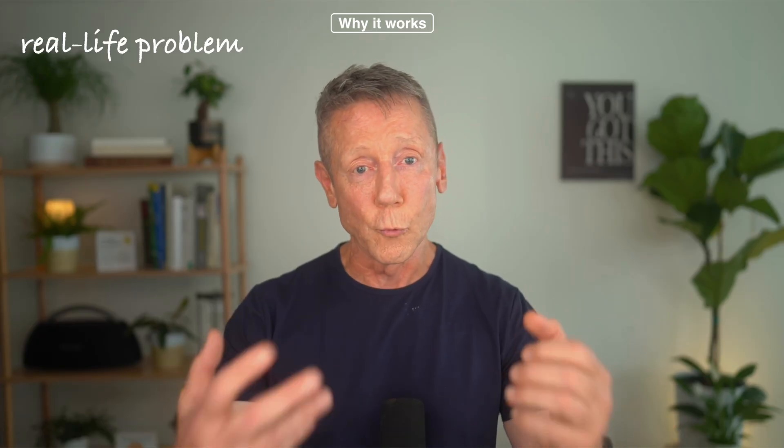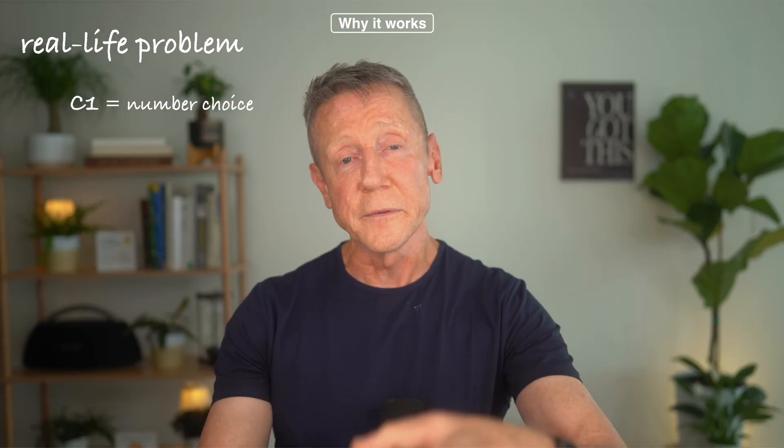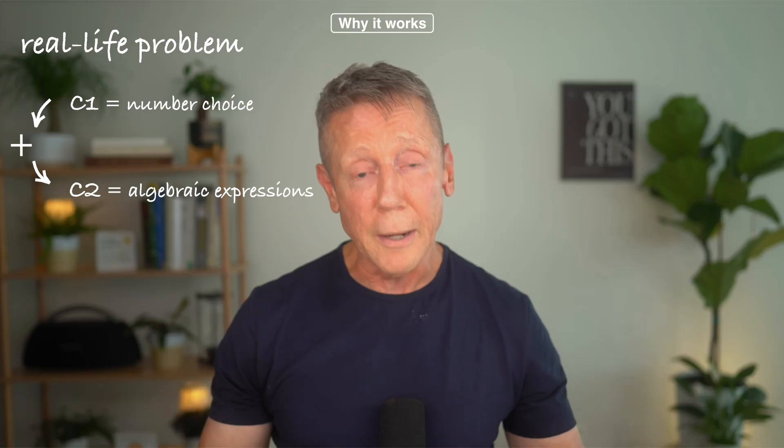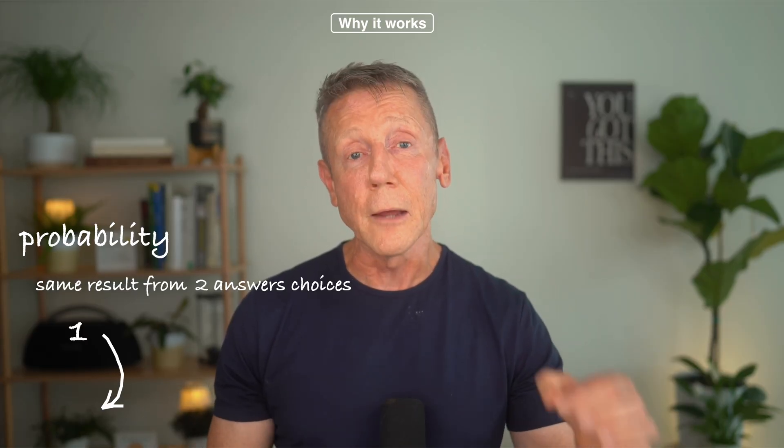But the engineer side of me says look, I respect that theory but we have a real life problem. We have constraints we put on the numbers we choose to use and the SAT writers have constraints on the algebraic expressions they create. When you combine those constraints it lowers the probability of getting the same result for two answer choices down to next to nothing.